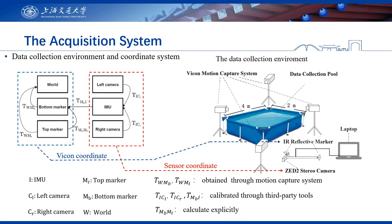Now I will introduce the acquisition system of our dataset. The left diagram shows the transformation relationship between different sensors. There are two types of coordinate systems used in our dataset. First, the WICOM coordinate system, in which the pose of the two sets of infrared reflective markers provided by WICOM are expressed.